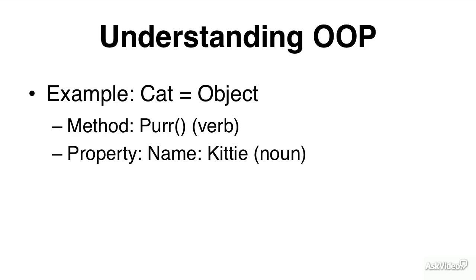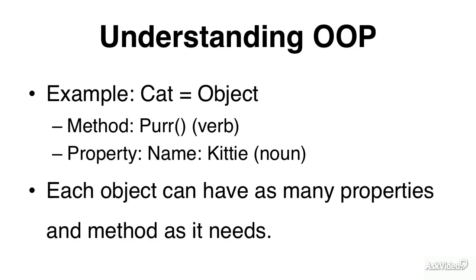The property, for example, of a cat would be a name, and the name of the cat would be kitty. This is a noun. Each object can have as many properties and methods as it needs. You can create these objects, or you can use predefined objects that exist within the API of JavaScript.